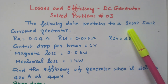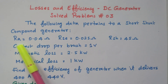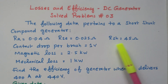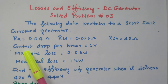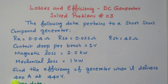The following data pertains to a short shunt compound generator. The armature resistance is 0.04 ohm, series field resistance is 0.025 ohm, shunt field resistance is 45 ohm. The compound generator means we have both series field as well as shunt field. Contact drop per brush is 1 volt. The magnetic loss is 2.5 kilowatt and mechanical loss is 1 kilowatt. Find the efficiency of the generator when it delivers 400 ampere at 440 volts.